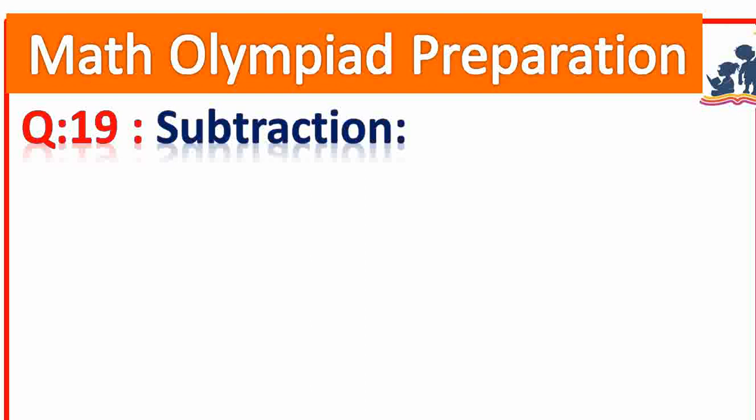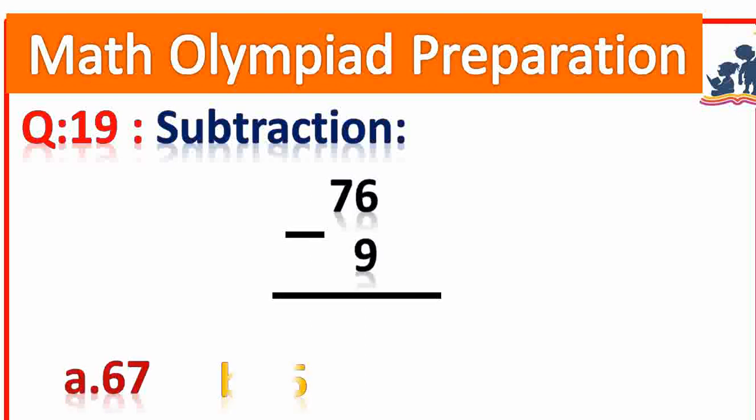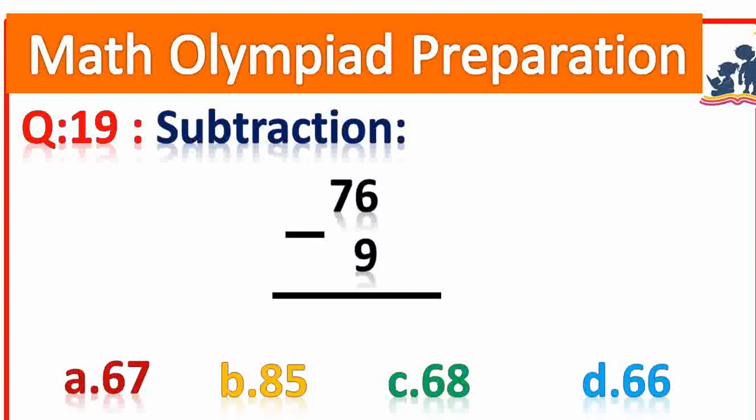Question number 19. Subtraction: 76 minus 9 is equal to how much? 67. Very good.